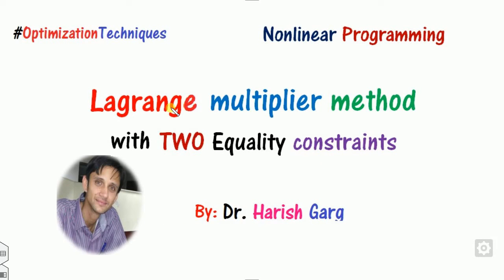Hello everyone. Welcome to the next lecture on the optimization technique. Today we will discuss the Lagrange multiplier method when there are two equality constraints. Remember that this Lagrange multiplier method is applicable only when constraints are of equality sign.